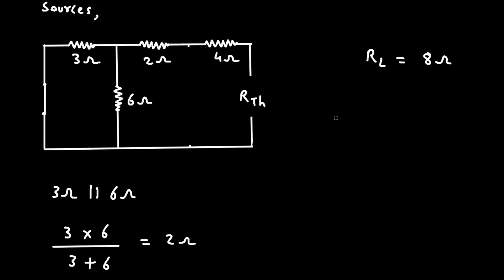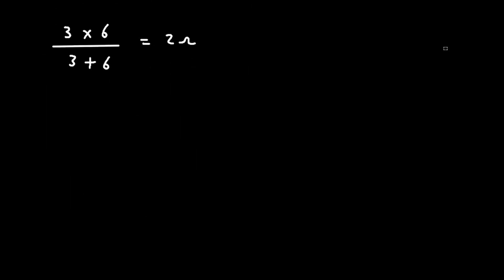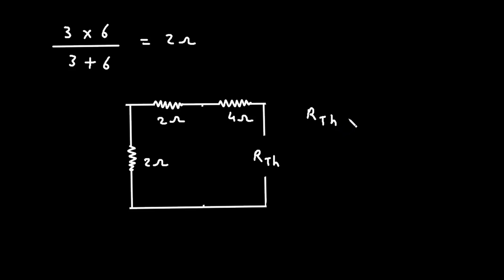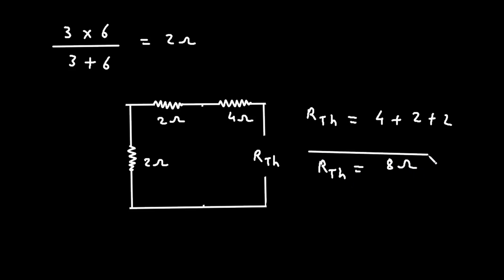Now let's copy this circuit and we can replace these two resistors by a single resistance of 2 ohm. Now here we can see RTH — these are all the resistances connected in series, so it will be 4 plus 2 plus 2, which is equal to 8. So therefore RTH is equal to 8 ohm.